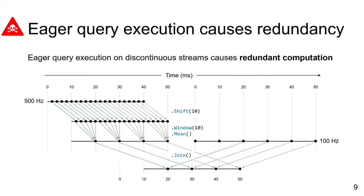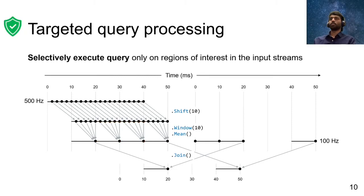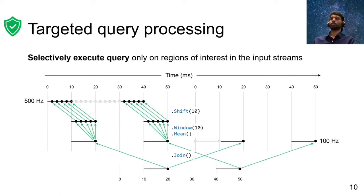Finally, traditional stream processing engines follow an eager query execution pattern. Therefore, when there are discontinuities in the input streams, some of the intermediate events generated might need to be thrown away, rendering any prior computations done on those events completely wasteful. LiveStream solves this problem by using a method called targeted query processing. In this method, LiveStream uses the linearity property at runtime and maps the regions of the input stream that are expected to produce events in the final output stream, and then selectively executes the query only on those regions. This allows LiveStream to minimize the redundant events generated during query execution.